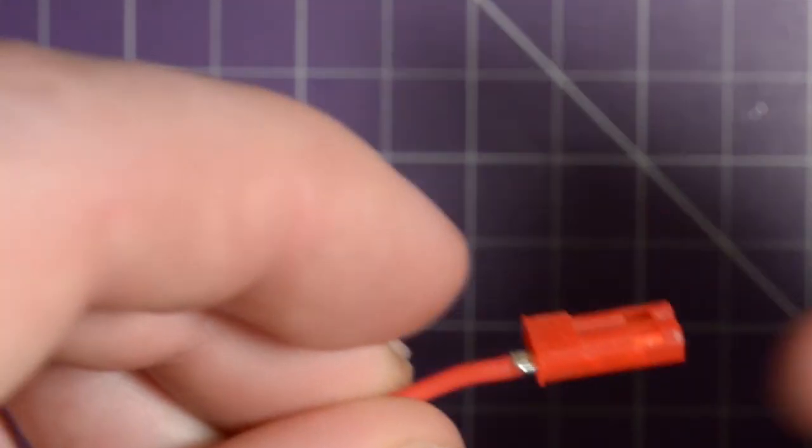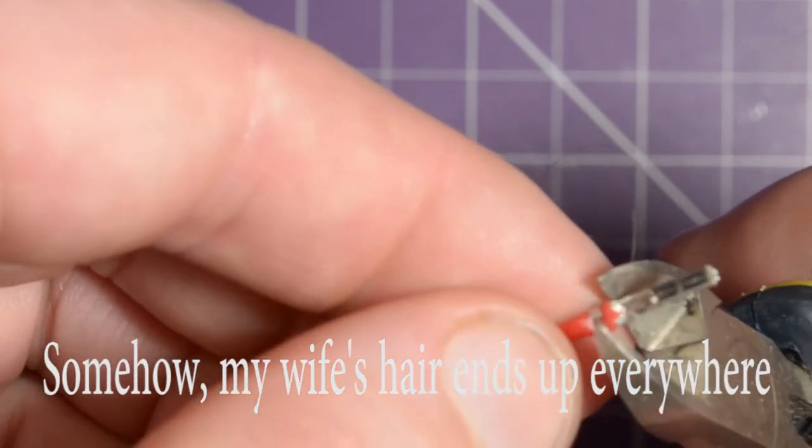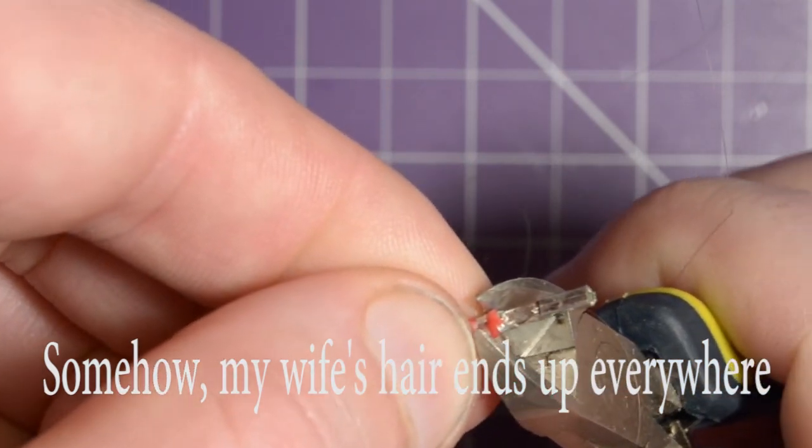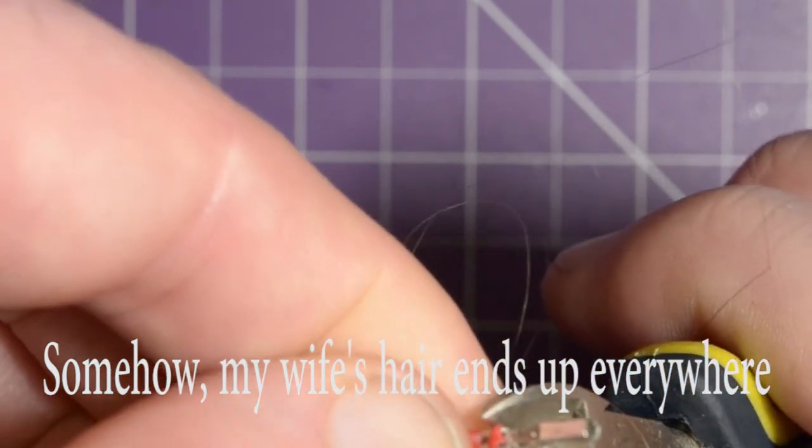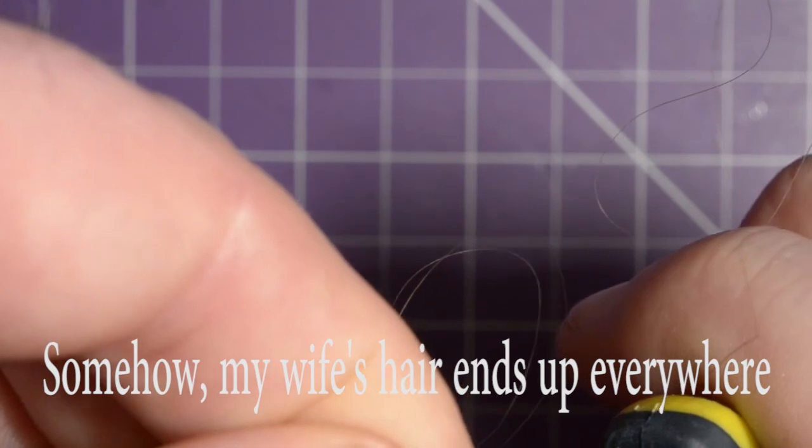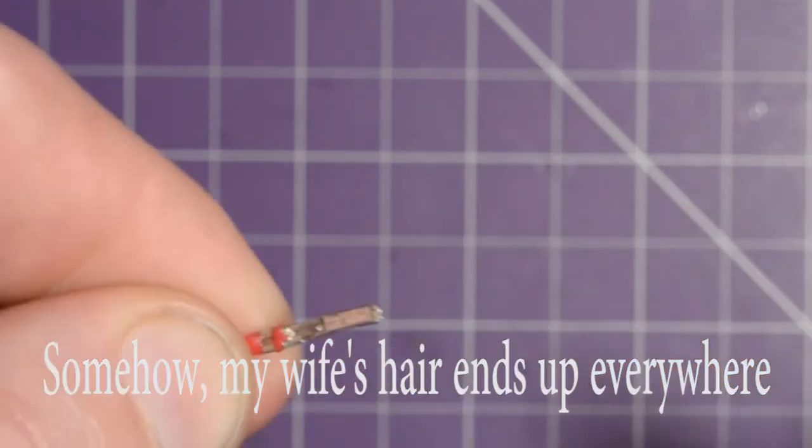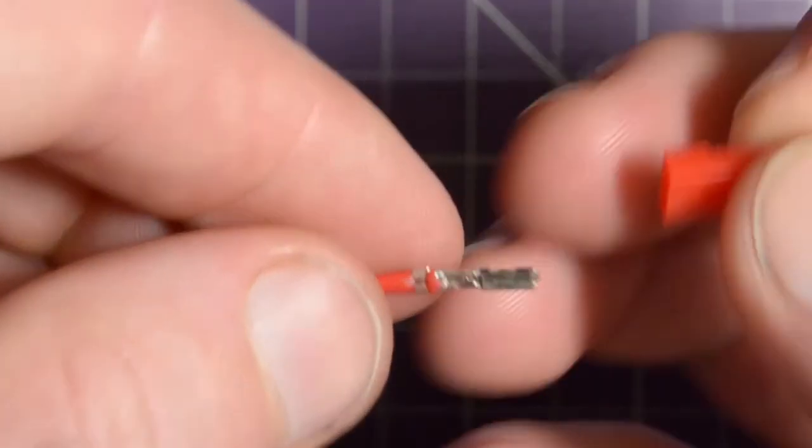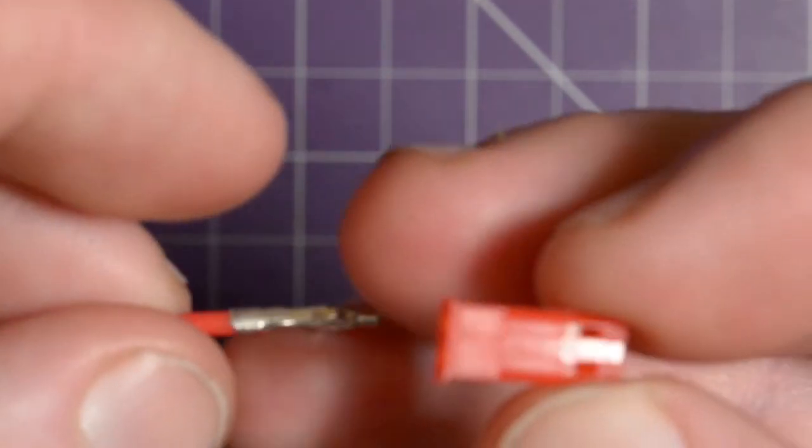And sometimes this section here is too fat, it won't go in. So if that happens you could just take it out, give it a little bit of a crush, sort of this way. I'm going to crush it, don't cut it, just crush it. That makes it a little bit thinner and sometimes helps it come in.